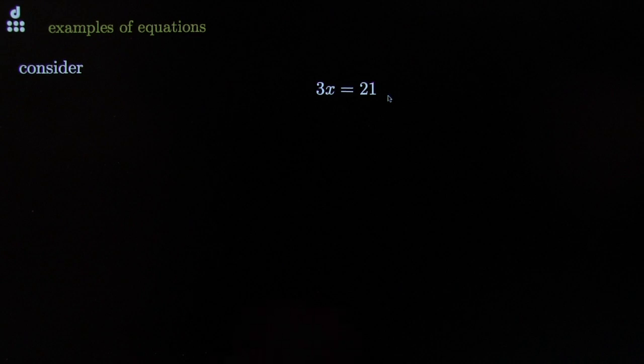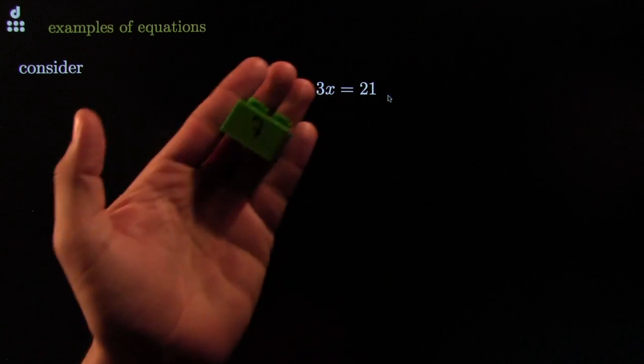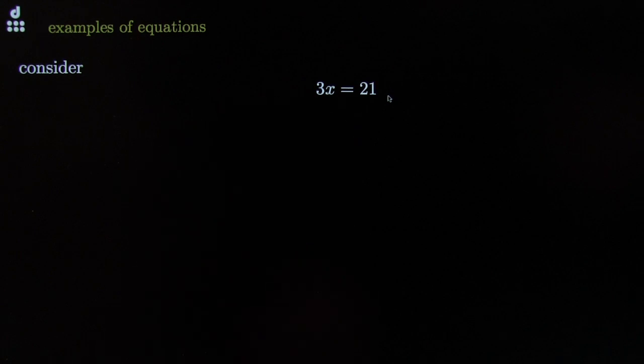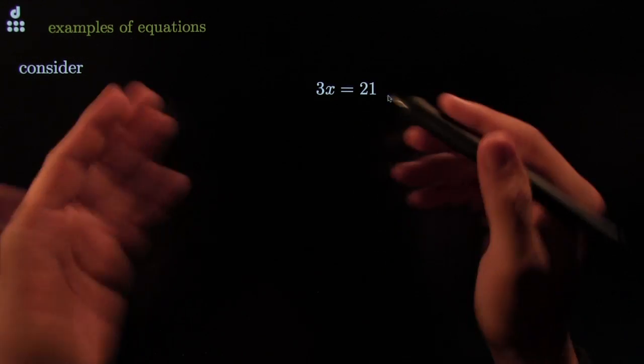Can you guess what the number is? I'm reaching for the number now. Yes, it's 7, because 3 times 7 is 21. That right there, that's an equation.